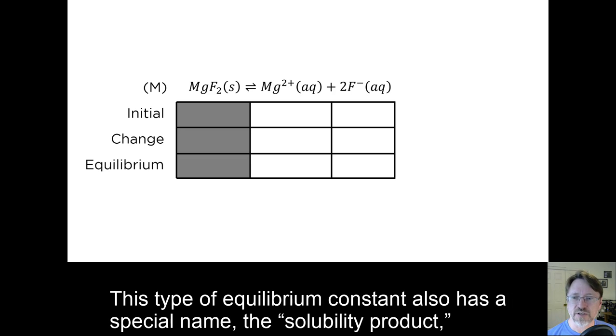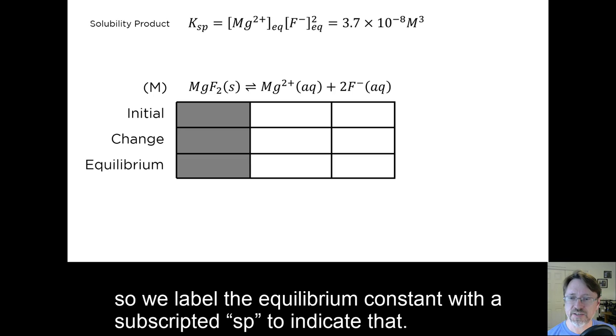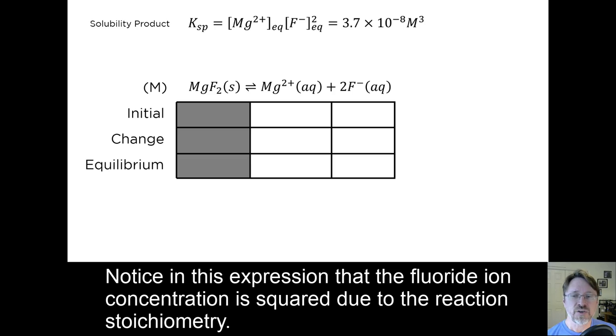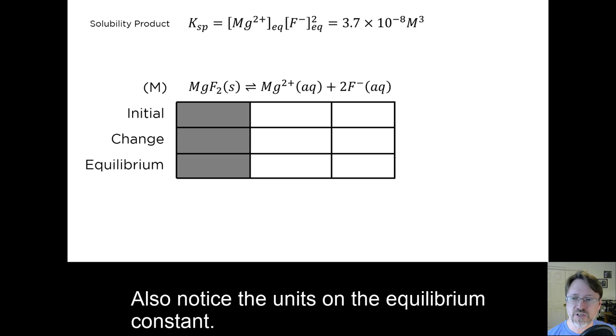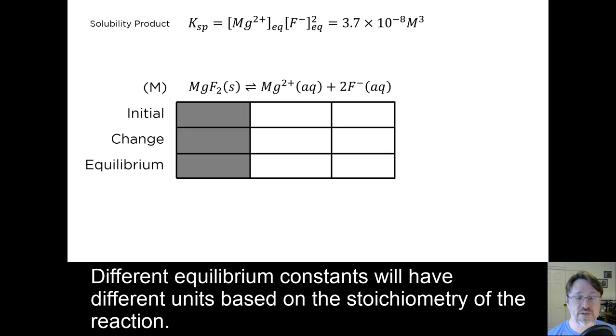This type of equilibrium constant also has a special name, the solubility product, so we label the equilibrium constant with a subscripted sp to indicate that. Notice in this expression that the fluoride ion concentration is squared due to the reaction stoichiometry. Also notice the units on the equilibrium constant. Different equilibrium constants will have different units based on the stoichiometry of the reaction.